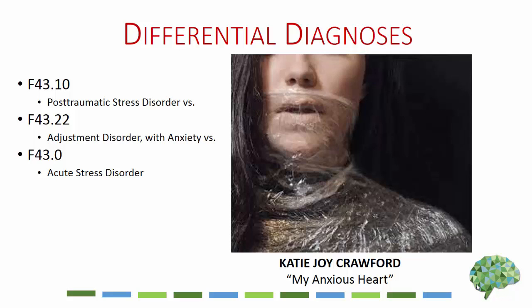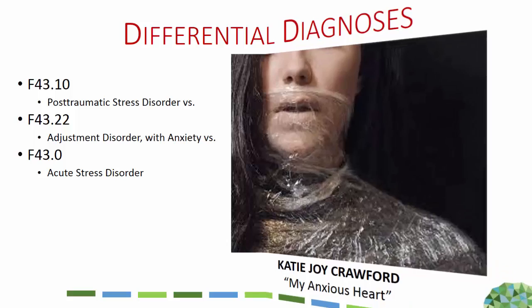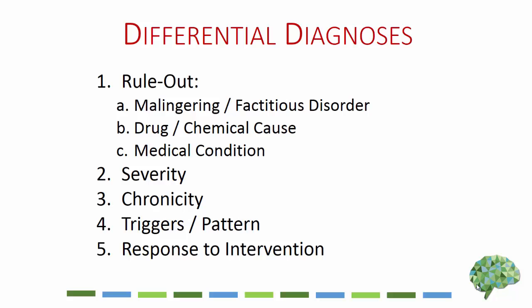Using differential diagnoses, we list all three and then move forward over the next couple of sessions trying to focus in on which it is. This is helpful in many ways: it sharpens our thinking, and it helps the client learn about the differences among the three potential disorders — empowering them with more knowledge. There are five steps to conducting differential diagnosis, beginning with ruling out malingering or factitious disorder. For most people in a clinical counseling practice, you don't have to worry about this, but you should keep it in mind.